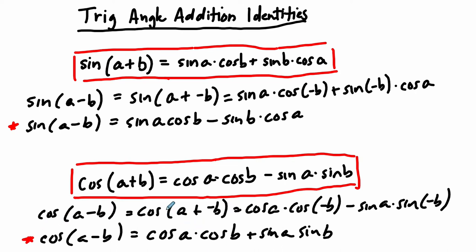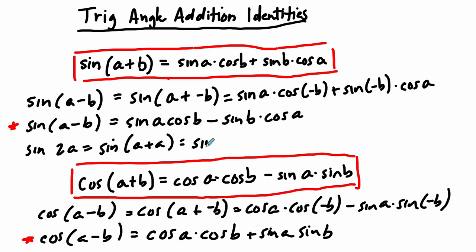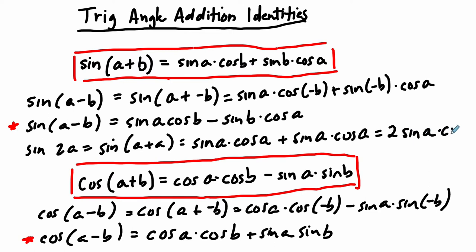What if I want to know what the sine of 2A equals? The sine of 2A equals the sine of A plus A, which equals sine A times cosine A plus sine A times cosine A — two groups of sine A times cosine A. So sine of 2A equals 2 sine A cosine A. This is a double angle formula.